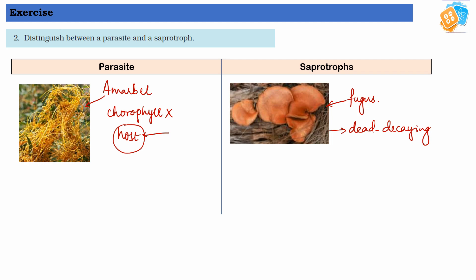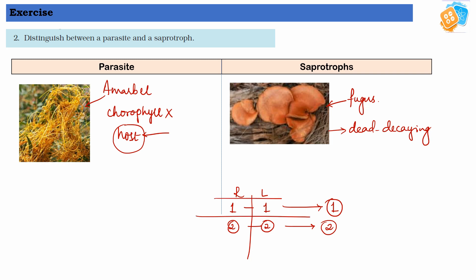So this is the difference between parasite and saprotrophs. Whenever they ask you to write a difference, you have to write one point for each side — that will count as one point for both. Then, as a second point, write an example for each. Always try to write the difference in a left-and-right format. The first point can be a definition; the second point will be a supporting argument or an example.